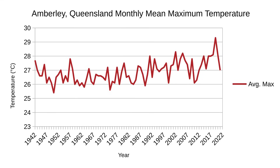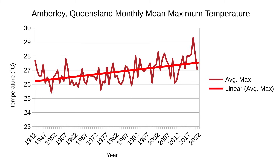Here's a chart of that data showing the average maximums since the early 1940s. If we put a trend line in there, we can see that the average maximum temperatures are trending upwards. However, I thought this doesn't tell the full story.